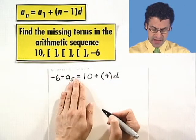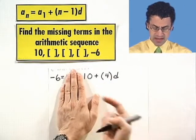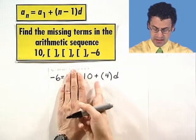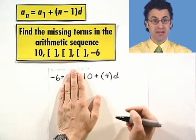If I let this middle piece fade into the background, I now see an equation. Negative 6 equals 10 plus 4d. I can now solve for d and find that difference.